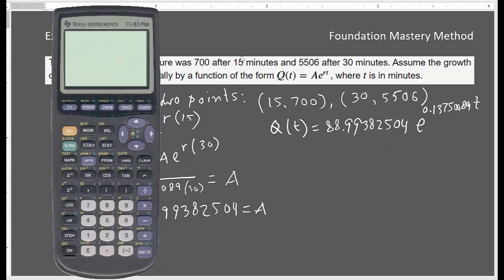Now I want to show you how to model this problem using just a graphing calculator. So the points we have got are 15, 700 and 30, 5506. So go to STAT, go to Edit. And if you have some data already there, you can clean it. Go up, clean, enter. Now for 15, then I type 30. Now my y values are 700 for 15, and then 5506 for 30.